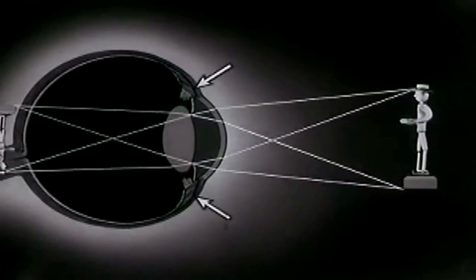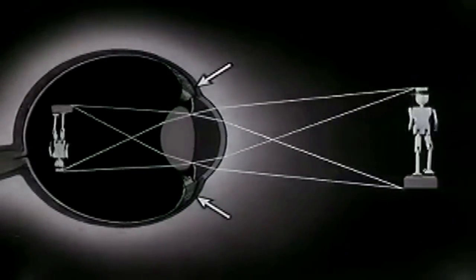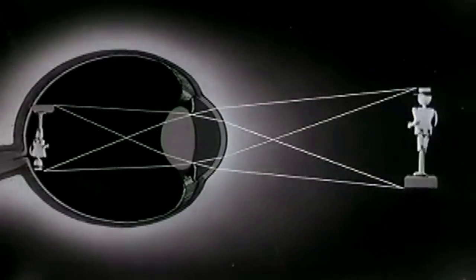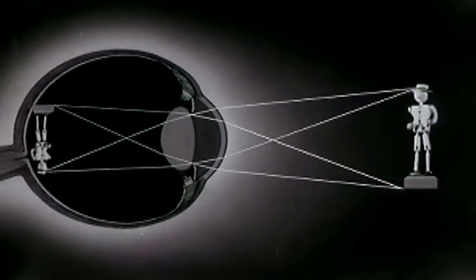The muscles attached to the rim of the lens regulate the curvature of the lens surface so that the image falls on the retina and is seen sharply.